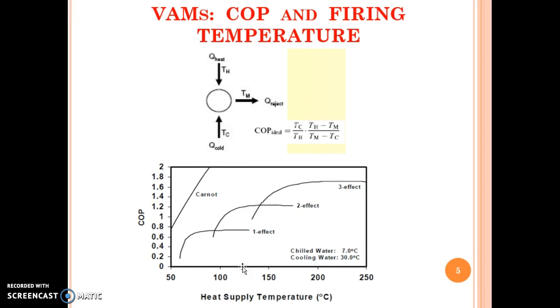So as the temperature increases, the efficiency increases nearly linearly. But the real machines cannot provide such high efficiencies. As it can be seen, if it is a single effect vapor absorption machine, this is the efficiency you get as the temperature rises, but at higher temperatures the efficiency becomes flat.